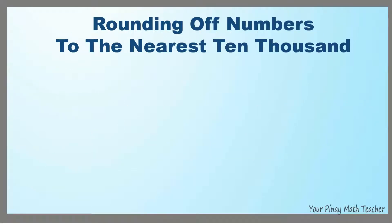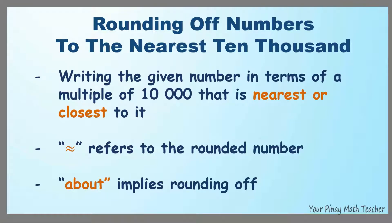What does rounding off numbers to the nearest 10,000 mean? It means writing the given number in terms of a multiple of 10,000 that is nearest or closest to it. This symbol refers to the rounded number and the word 'about' implies rounding off.